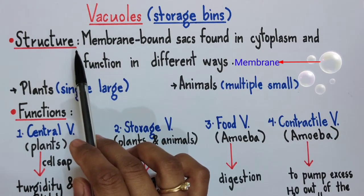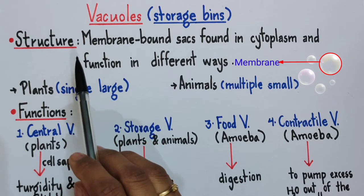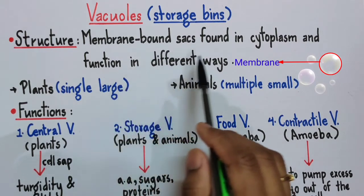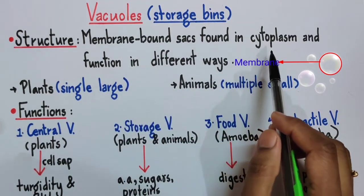Vacuoles are structurally similar to lysosomes. These are also membrane-bound sacs found in the cytoplasm, scattered here and there.